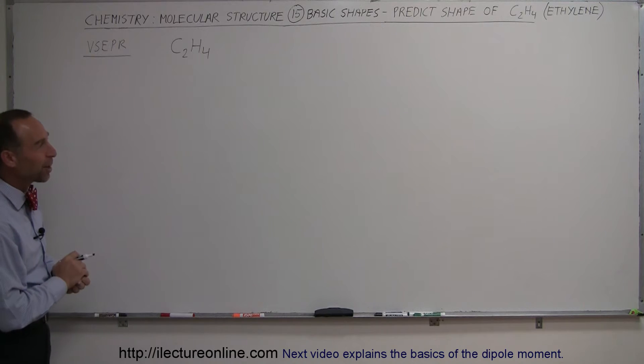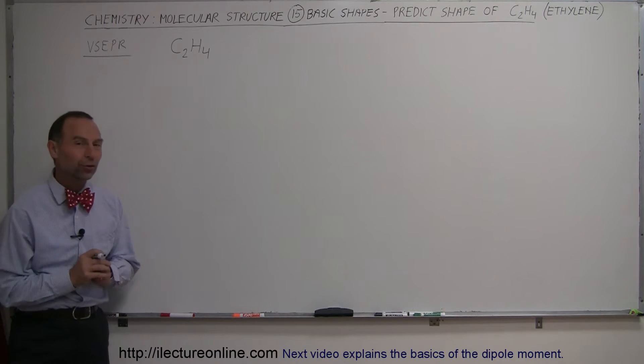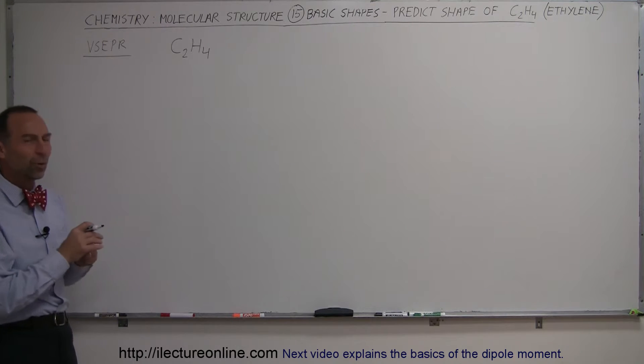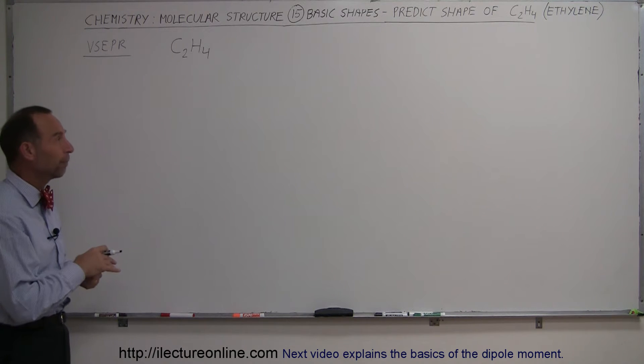Welcome to our lecture online. Our next molecule is going to be C2H4, also known as ethylene, to be differentiated from ethane. Ethane is C2H6. So what is the difference between C2H6 and C2H4?